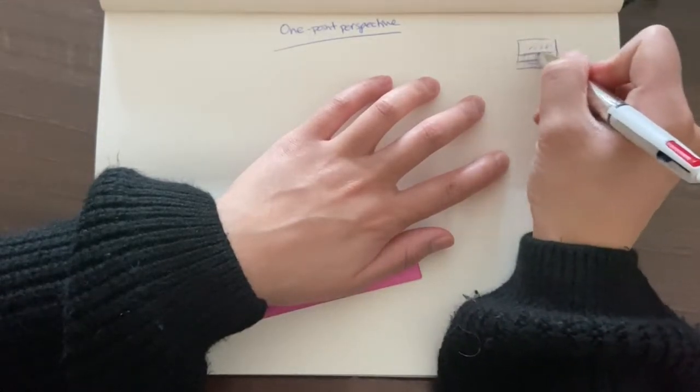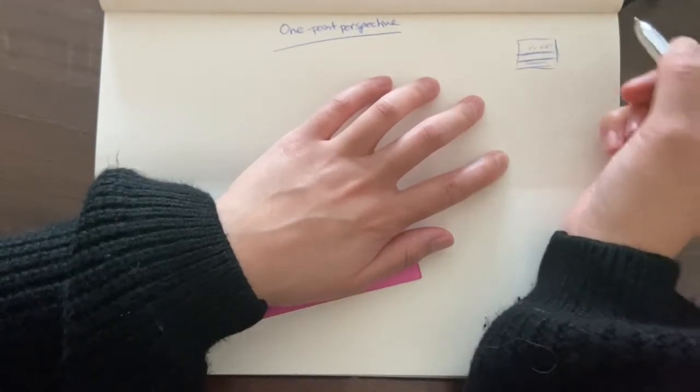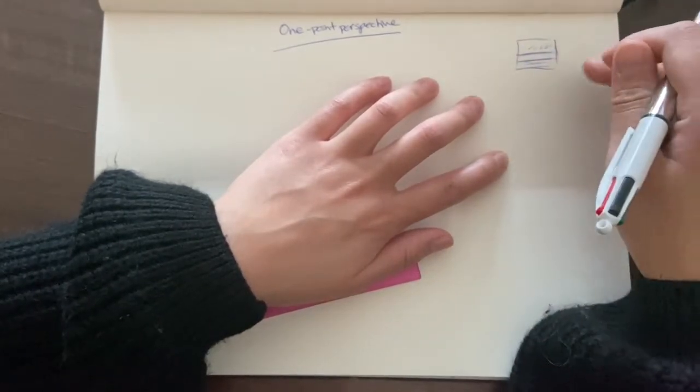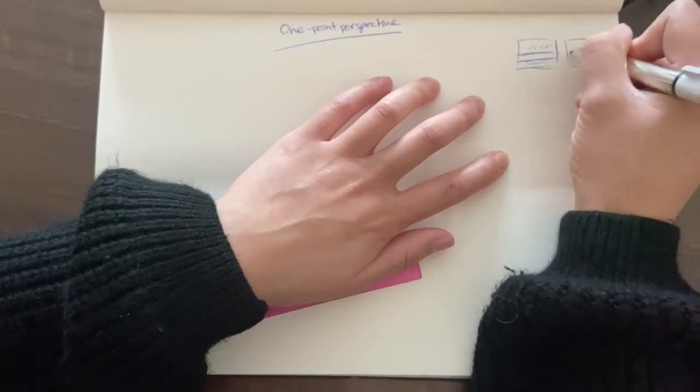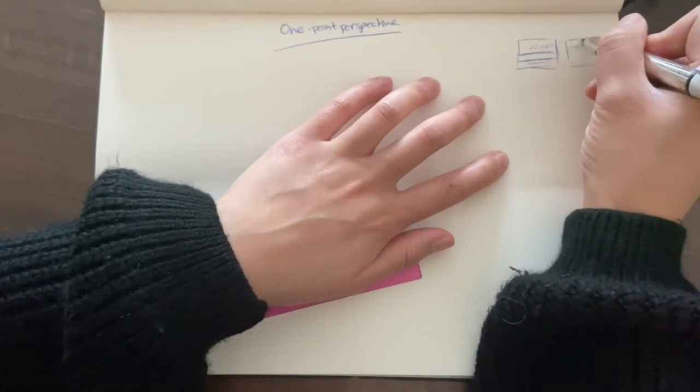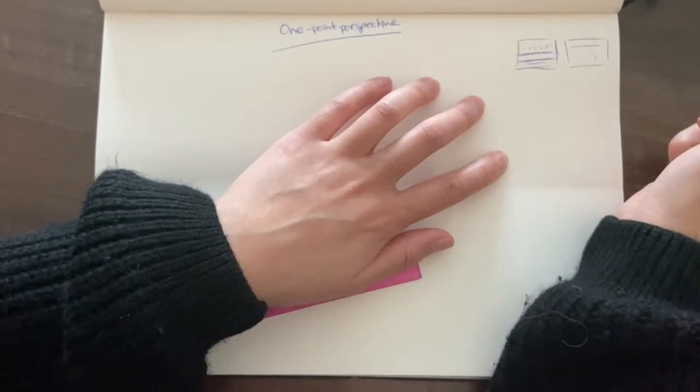So the horizon line is somewhere in the middle, but that always changes depending on your point of view. So sometimes your horizon line could be higher up, and you see less of the sky and more of the seashore itself.